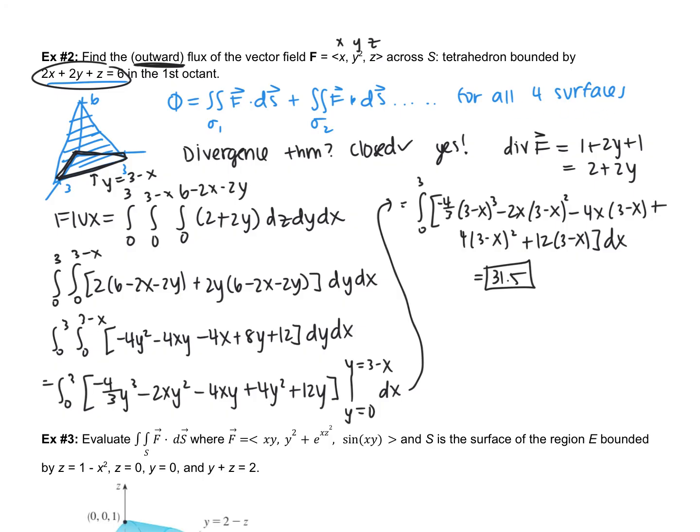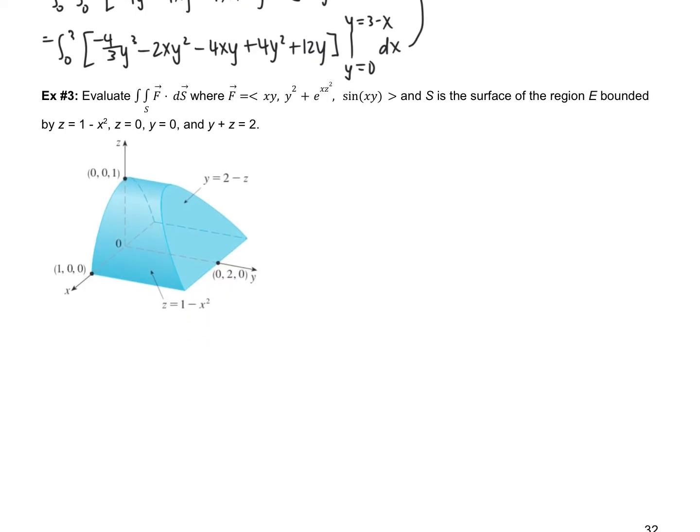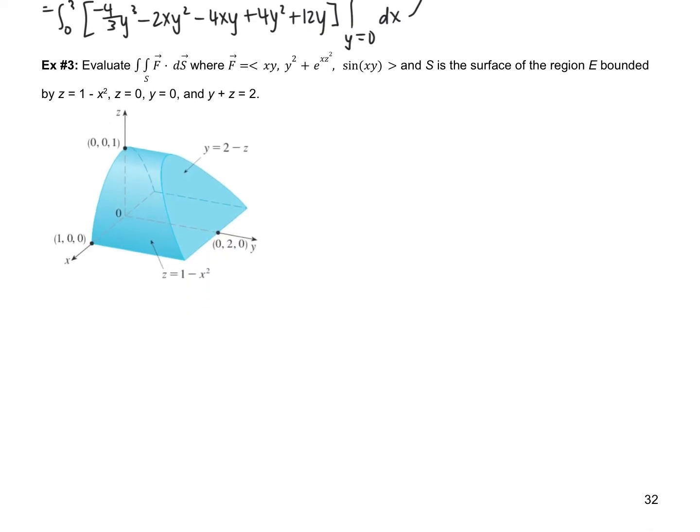So, we have one more example that we're going to do and then we have one more topic to talk about and then we will be done. Okay. Example number 3. Evaluate this surface integral, which calculates flux, where F is that vector field and S is the surface of the region E bounded by z equals 1 subtract x squared, z is equal to 0, y is equal to 0, and y add z equals 2.